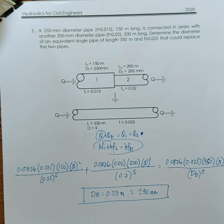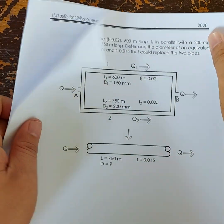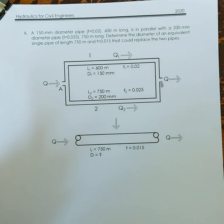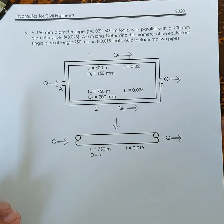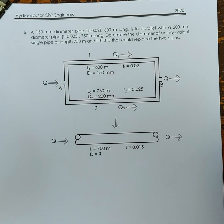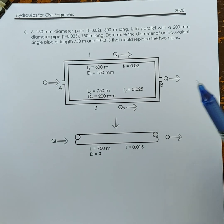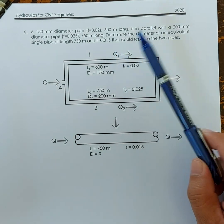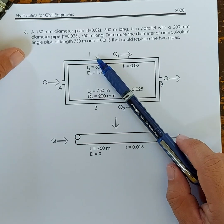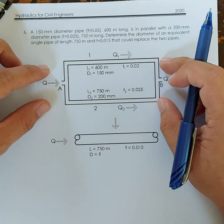Let's proceed to problem number six. A 150 mm diameter pipe with friction factor 0.02, 600 meters long, is in parallel with a 200 mm diameter pipe with friction factor 0.025, 750 meters long. Determine the diameter of an equivalent single pipe that could replace the two pipes.